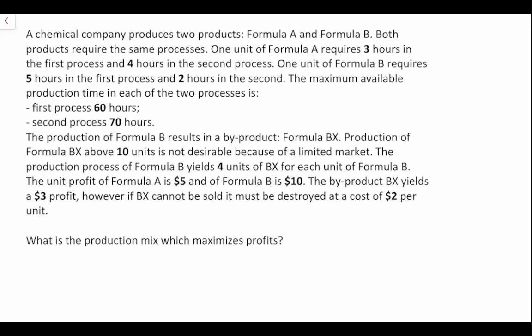The production of Formula B results in a byproduct called Formula BX. Production of BX above 10 units is not desirable because of a limited market. The production process of Formula B yields four units of BX for each unit of Formula B. The unit profit of Formula A is $5 and Formula B is $10. The byproduct BX yields a $3 profit. However, if BX cannot be sold it must be destroyed at a cost of $2 per unit.